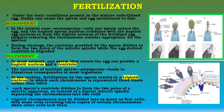In the normal case of monospermy, only one sperm enters the egg and the haploid sperm nucleus combines with the haploid egg nucleus to form the diploid nucleus of the fertilized egg, restoring the chromosome number appropriate for the species. During cleavage, the centriole provided by the sperm divides to form the two poles of the mitotic spindle, while the egg-derived centriole is degraded.